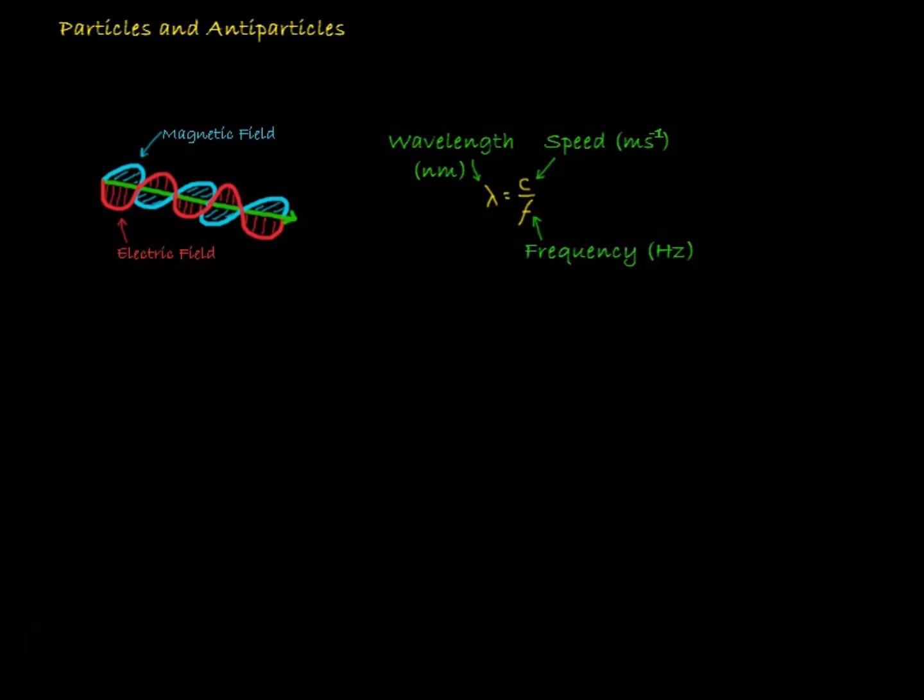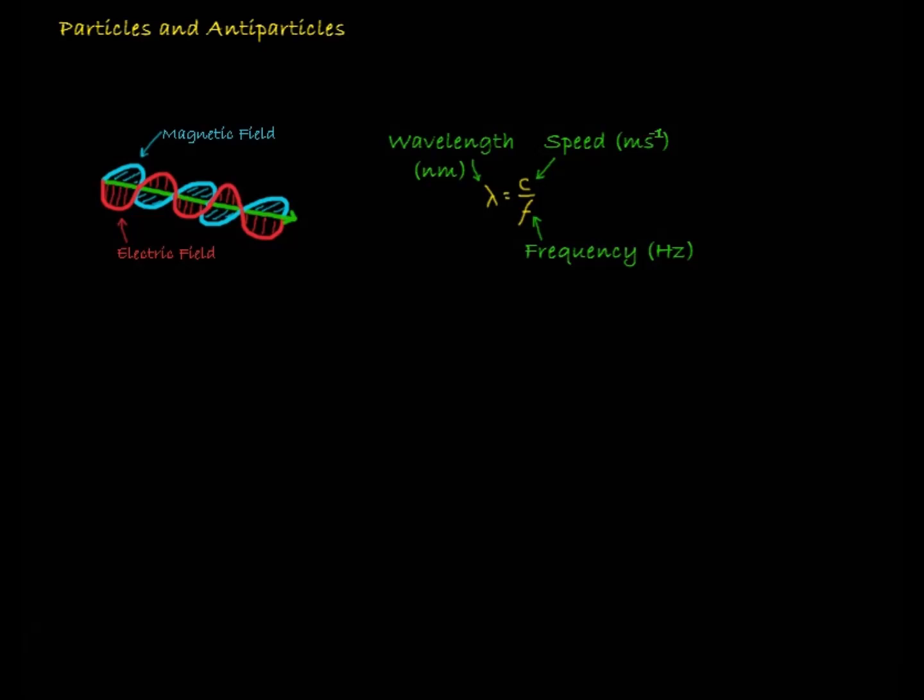Photons are emitted by charged particles that lose energy. So electrons being stopped or slowed down or moving to a shell of lower energy in an atom emit photons. We can calculate the energy of a photon by multiplying its frequency by Planck's constant, 6.63 times 10 to the minus 34 joule seconds.